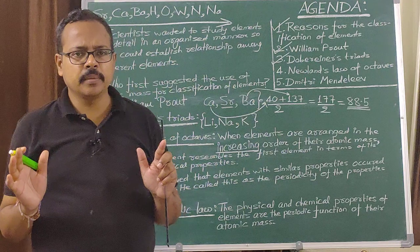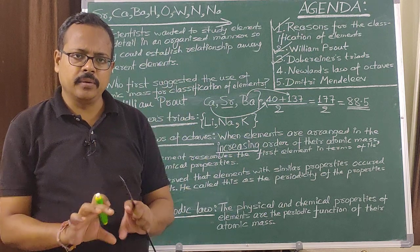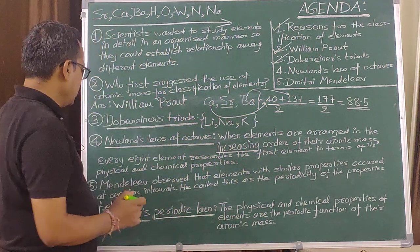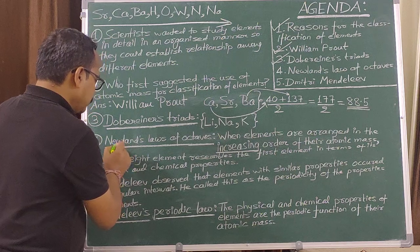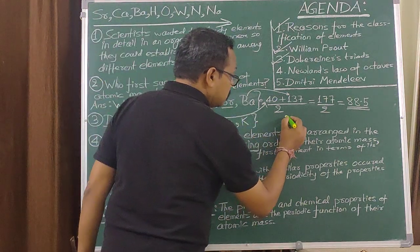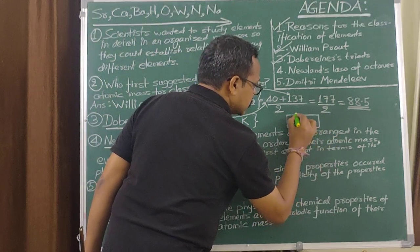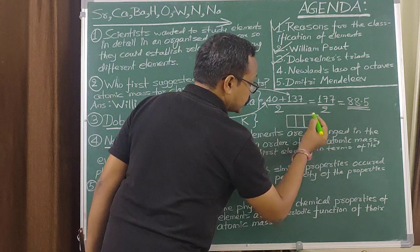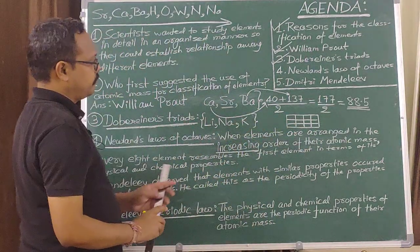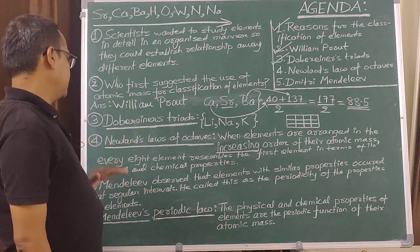In the modern periodic table, elements are arranged in the form of a table. I personally give a lot of credit to Newland because he was the first one who came up with the concept of a periodic table consisting of groups — known as columns and periods. It was a quite remarkable achievement by Newland.